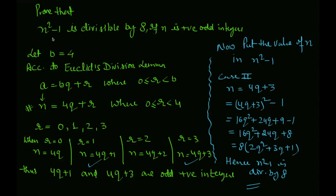This is what we had to prove, that n square minus 1 is divisible by 8 if n is a positive odd integer. You can see here, positive odd integers hi hai. This question is very easy. Practice kar lijiye ga.